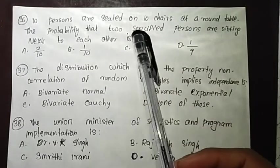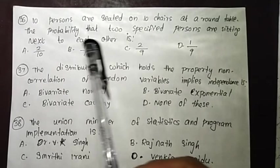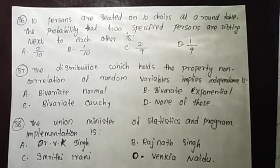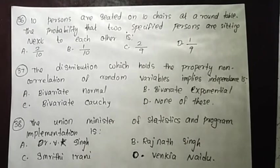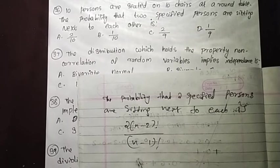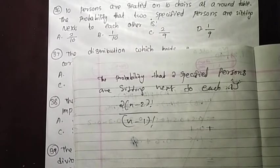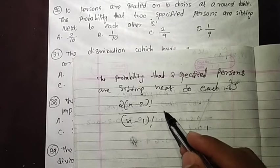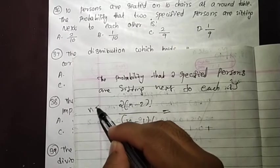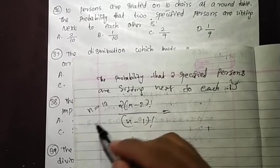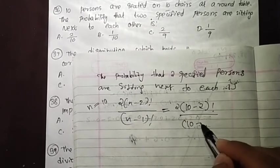Ten persons are seated on ten chairs at a round table. The probability that two specified persons are sitting next to each other is to be found. We have n equal to 10.